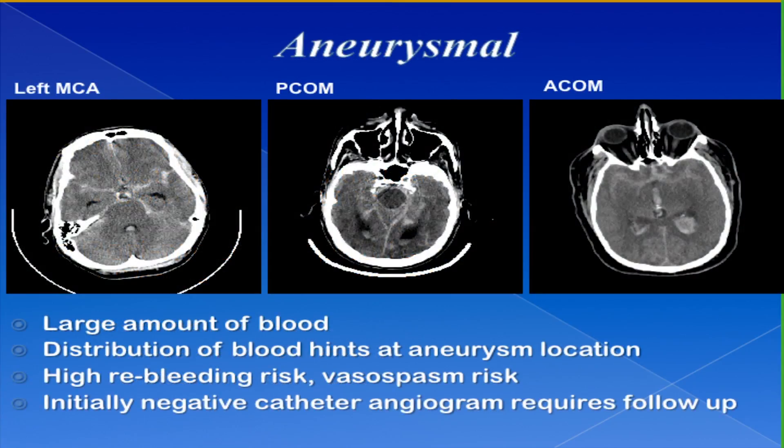Here are some examples of aneurysmal subarachnoid hemorrhage, related to an aneurysm usually at the circle of Willis at the base of the brain. We're looking at blood in the subarachnoid spaces outside the brain. Blood appears white here, and from the distribution of the blood you can often make an inference as to where the aneurysm might be. These are all aneurysmal patterns of blood distribution in the subarachnoid space.